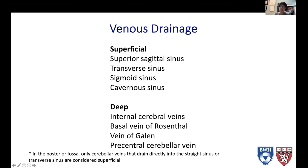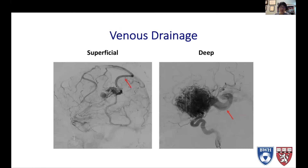The deep venous system also includes the basal vein of Rosenthal, the vein of Galen, and the precentral cerebellar vein, which drains into the vein of Galen. A point of confusion sometimes occurs with AVMs in the posterior fossa — in the cerebellum — where the only superficial venous drainage would be cerebellar veins draining directly into the straight sinus or transverse sinus. Here is an example of superficial venous drainage via the vein of Trolard into the superior sagittal sinus, and a large AVM draining into the basal vein of Rosenthal and the vein of Galen, representing deep venous drainage.